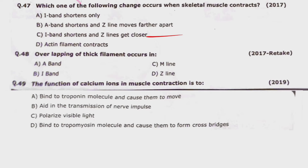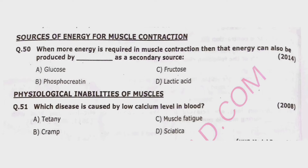Question 49: The function of calcium in muscle contraction is to: alpha — bind to troponin molecules and cause them to move; beta — aid in transmission of nerve impulse; charlie — polarize visible light; or delta — bind to tropomyosin molecules and cause them to form cross bridges. Correct option is alpha — bind to troponin molecules and cause them to move. Question 50: When more energy is required in muscle contraction, it can also be produced by what secondary source — glucose, phosphocreatine, fructose, or lactic acid? Correct option is beta — phosphocreatine.